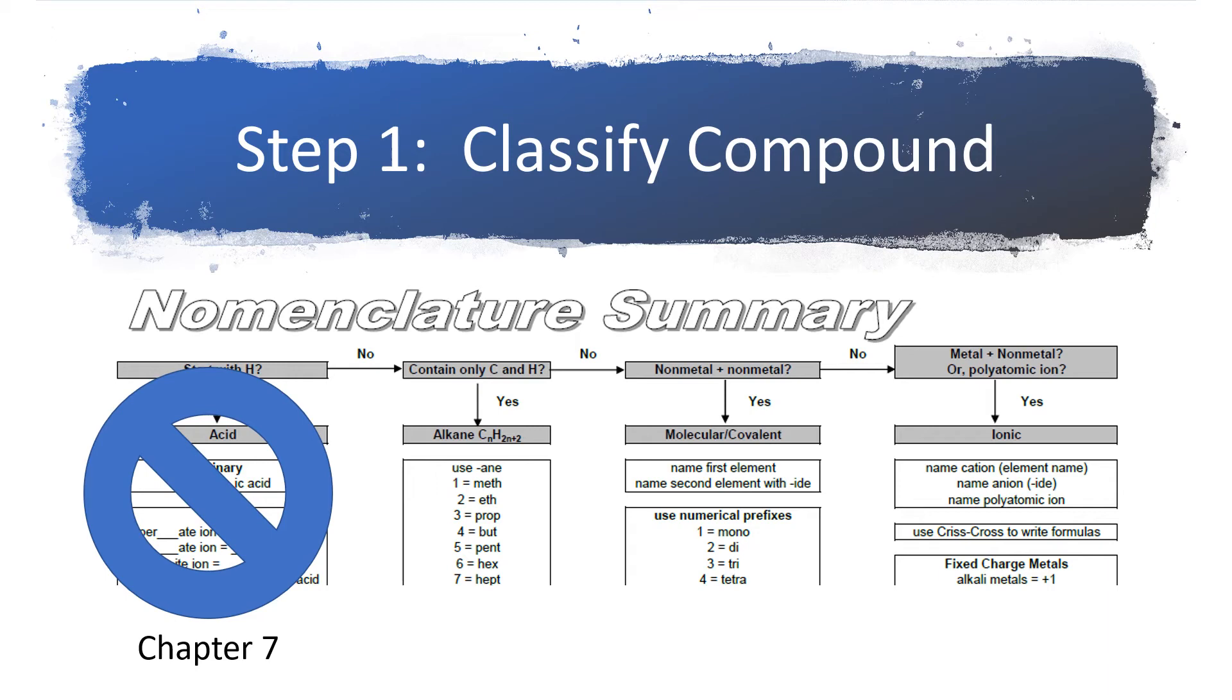If it does not, the next question to ask is, does the compound have a nonmetal plus another nonmetal? If the answer is yes, then it's a molecular covalent compound. If the answer is no, then you move across. And the new question is, is it a metal plus a nonmetal? Or do you see a polyatomic ion in there? And if either of those conditions are true, then it will be an ionic compound.